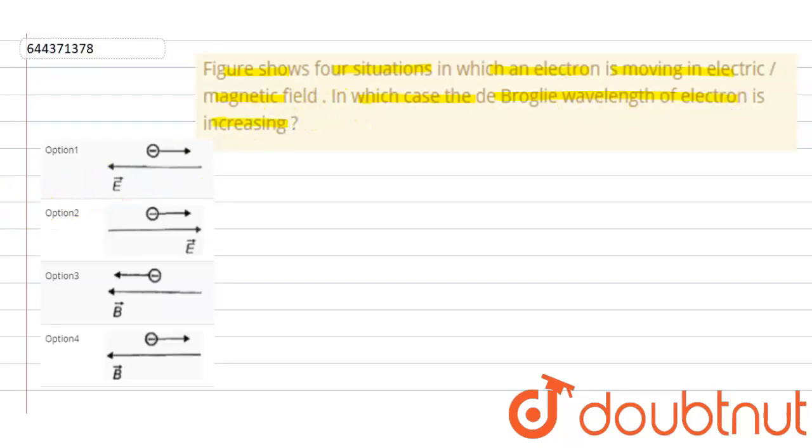So this question is based on the chapter dual nature. Now we know the formula for de Broglie wavelength is given λ = h/√(2mKE). That means λ is inversely proportional to √KE.